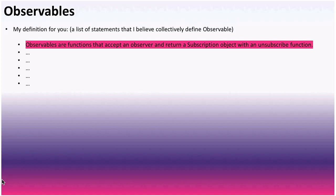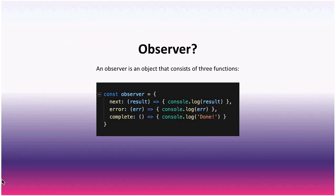Definitions of observables online tend to conflict and not make much sense, so here's a clear one: observables are functions that accept an observer and return a subscription object with an unsubscribe function. An observer is an object consisting of three functions: a next function, an error function, and a complete function.